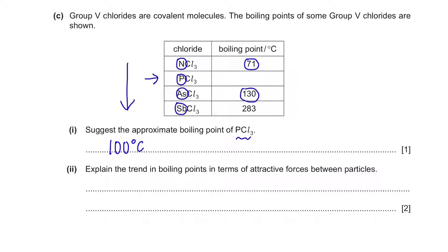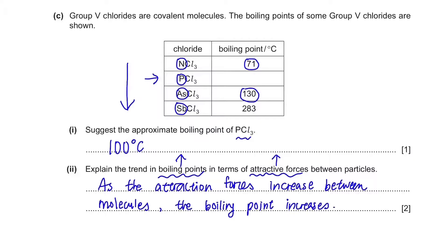Next, the question says, explain the trend in boiling points in terms of attractive forces between particles. So what we can say is, as the attractive forces between the molecules increase, you require more heat to break the forces. And that's why you need a higher boiling point. As the attractive forces increase between molecules, the boiling point increases.